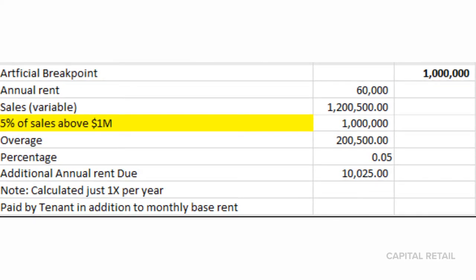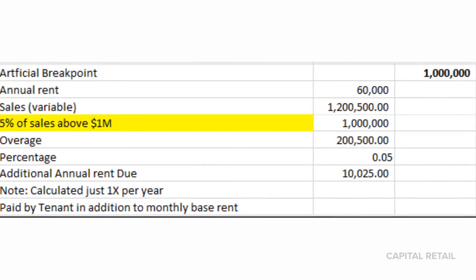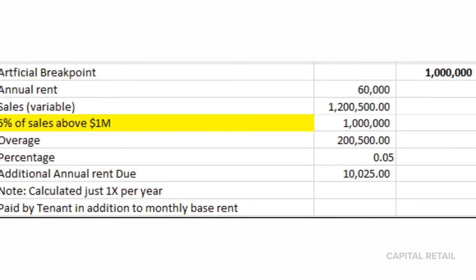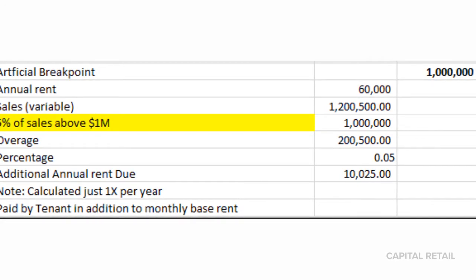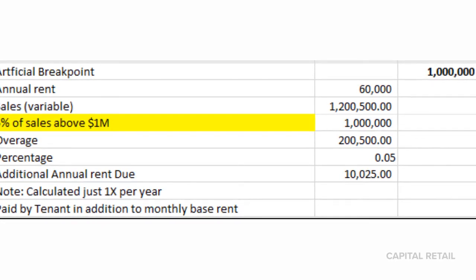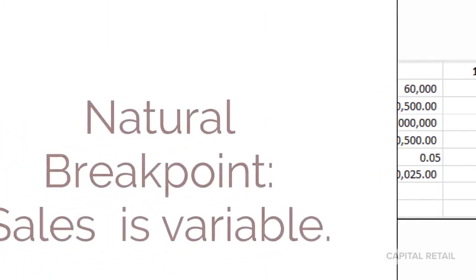The overage here is $200,500. We're going to times that by 5%. The additional annual rent due is $10,025. This is typically done on an annualized basis, and the tenant is usually paying this on top of the monthly base rent.